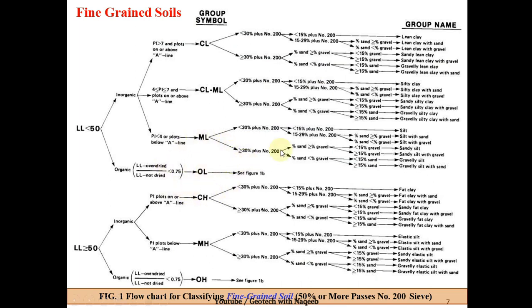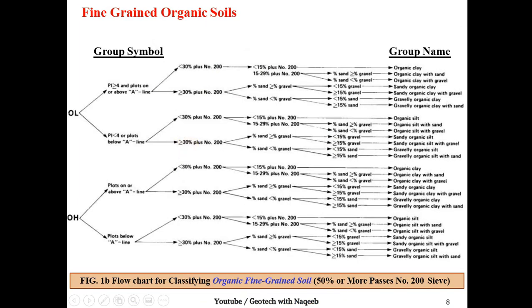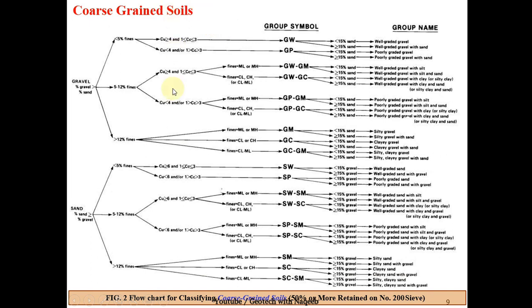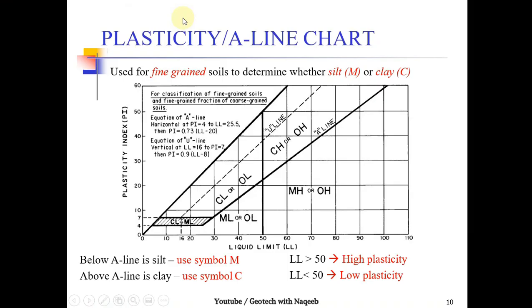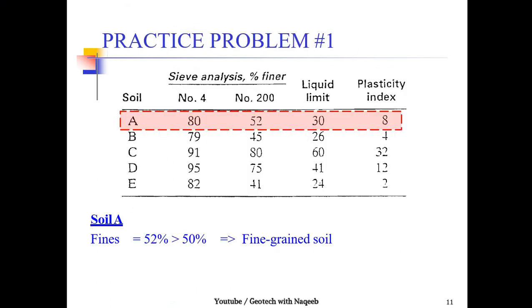Casagrande's plasticity chart is used for fine grain soils only. There is a separate chart for fine grain organic soils, and another chart for coarse grain soils. This plasticity or A-line chart can also be used to classify soil. In this lecture we will learn how to classify fine grain soil through an example; in coming lectures we'll cover coarse grain soil classification.